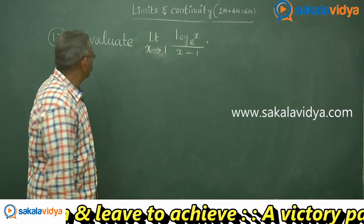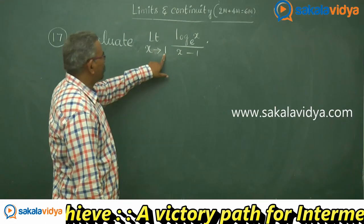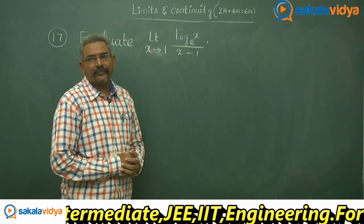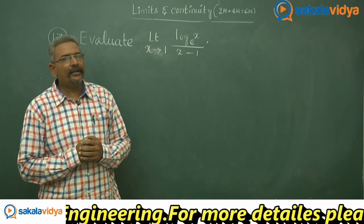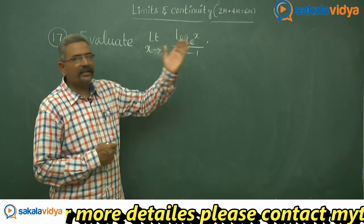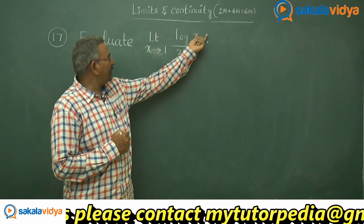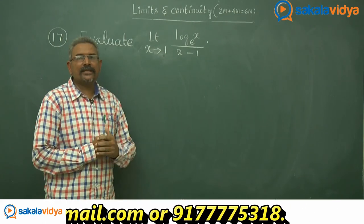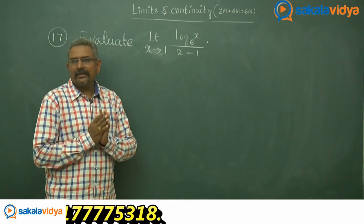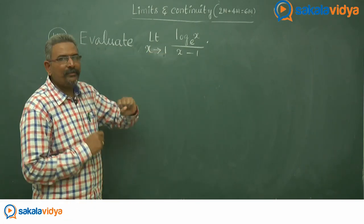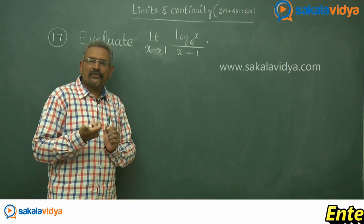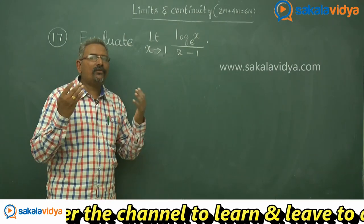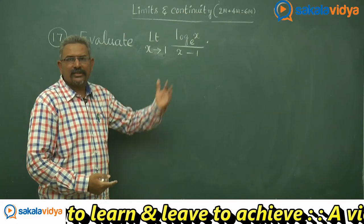Let us solve one more problem. Evaluate lim(x→1) of log x to the base e upon (x - 1). Here, let x - 1 = y, so x becomes 1 + y. As x approaches 1, y approaches 0. The expression becomes lim(y→0) log(1 + y) to the base e divided by y. We have a standard result: lim(x→0) log(1 + x)/x = 1. So this answer also becomes 1.